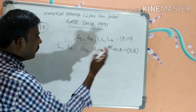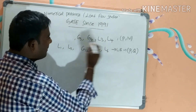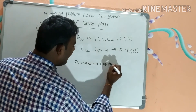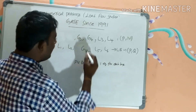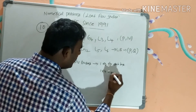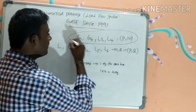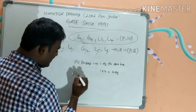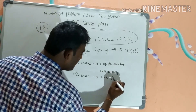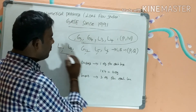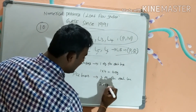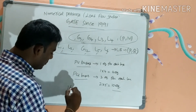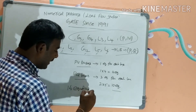For 4 PV buses, one equation each gives 4 equations. For 5 PQ buses, two equations each gives 10 equations. Total: 4 + 10 = 14 equations to solve in Newton-Raphson polar form.